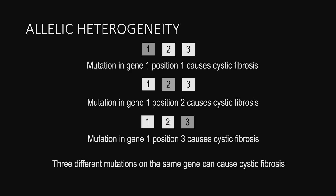Allelic heterogeneity occurs when different mutations in the same locus produce the same phenotype. These can occur due to genetic drift or genetic migration, both of which reduce variation. An example is cystic fibrosis — over 1,500 different mutations in the gene for the cystic fibrosis transmembrane receptor can cause this disorder.